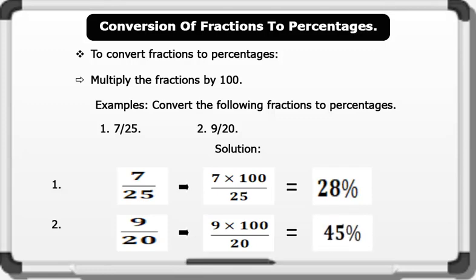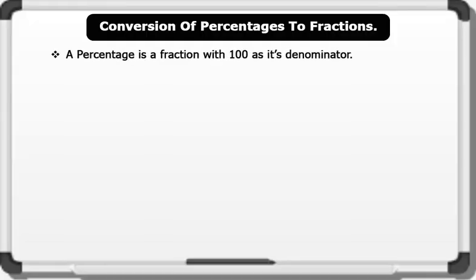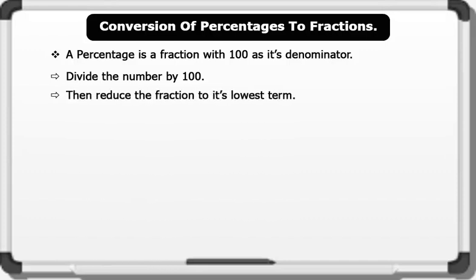That's brilliant. Now let's see how we can convert percentages to fractions. A percentage is a fraction with 100 as its denominator. To convert a percentage to a fraction, we simply divide the number by 100, then we reduce the fraction to its lowest term.